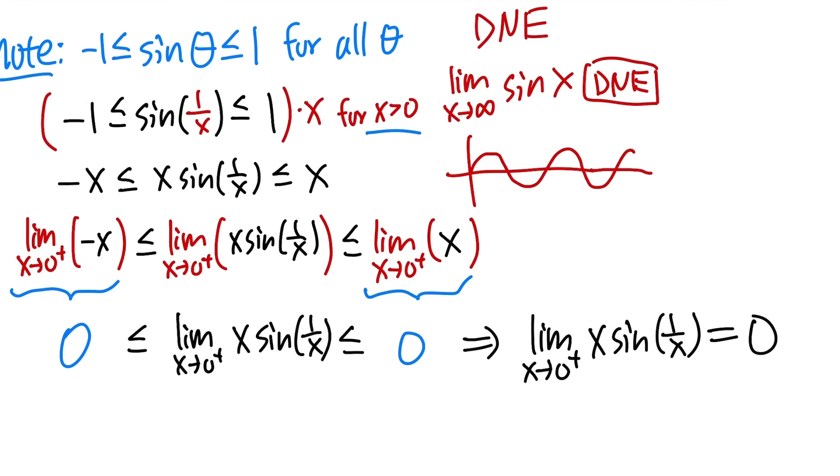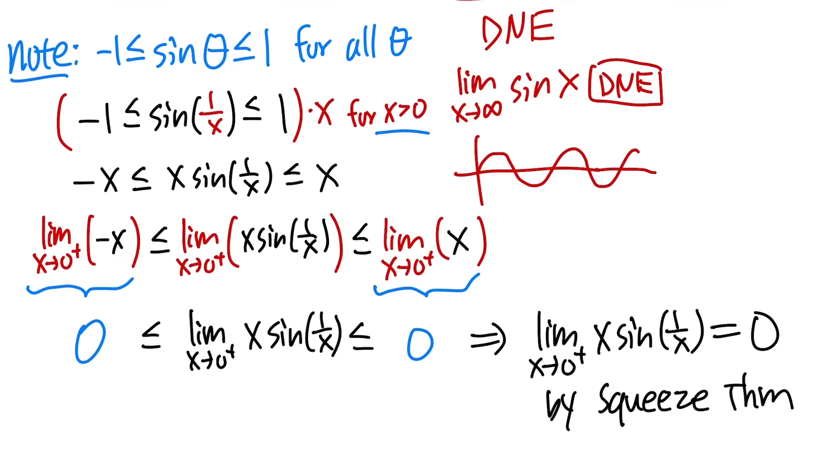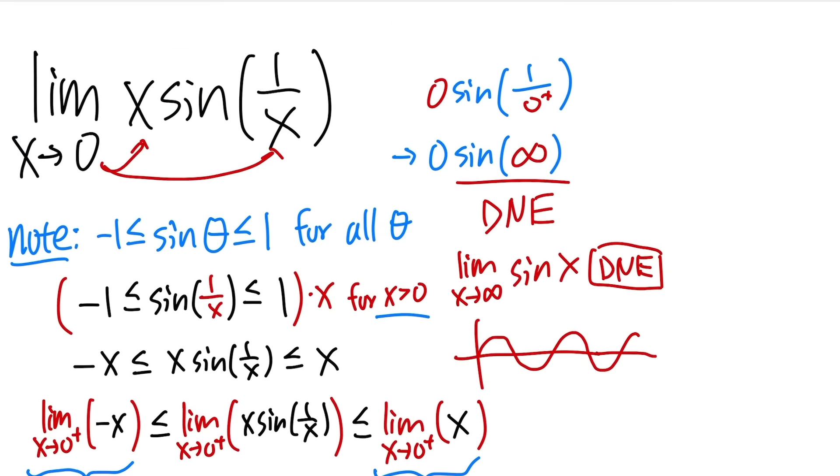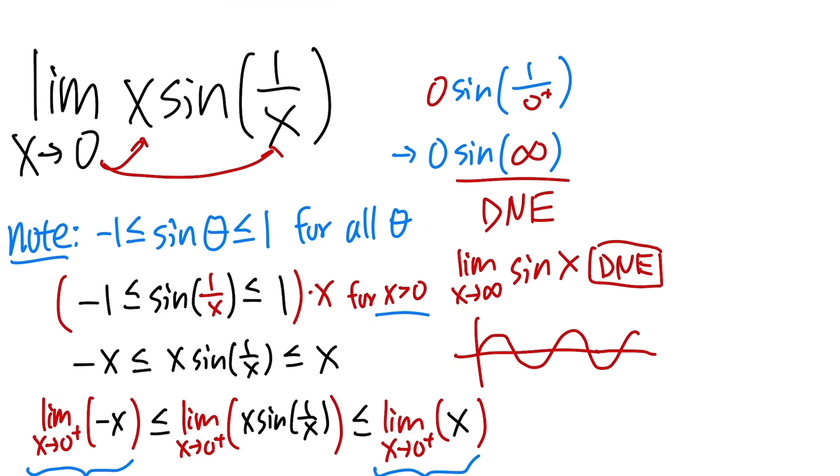And I will say, this is by the powerful squeeze theorem. Cool. And now, we will also have to do the other side, right? Because, as I said, originally, this is just 0, so we have to talk about 0 plus, and also 0 minus. But for the 0 minus, it's very, very straightforward.